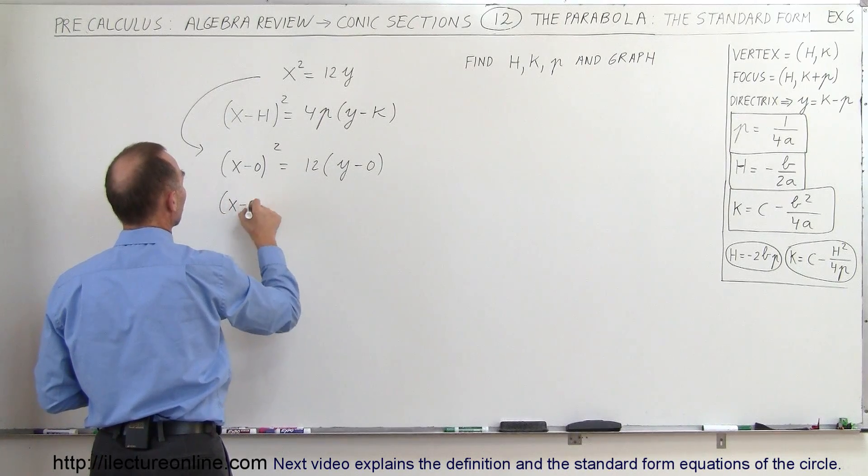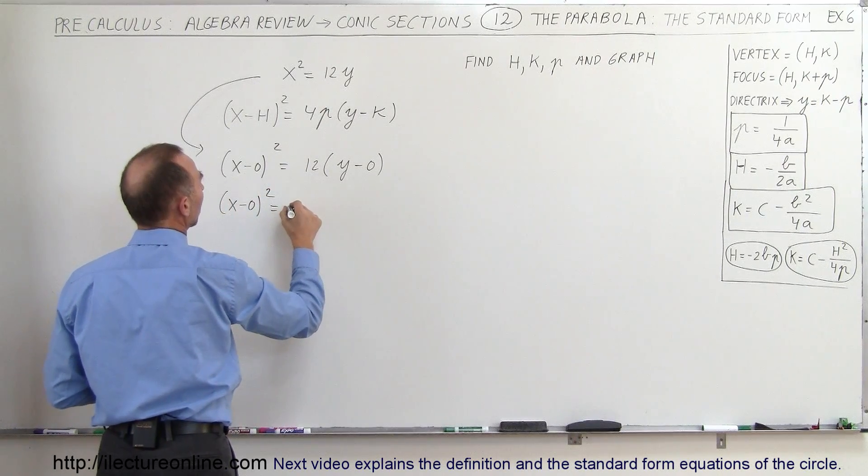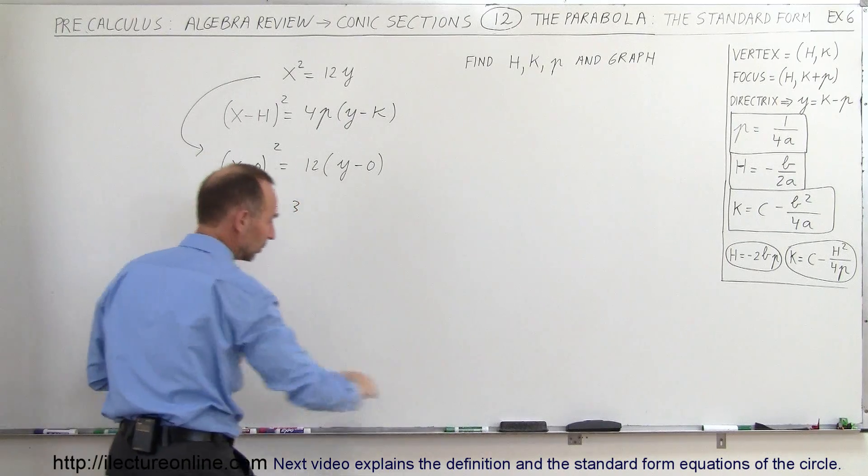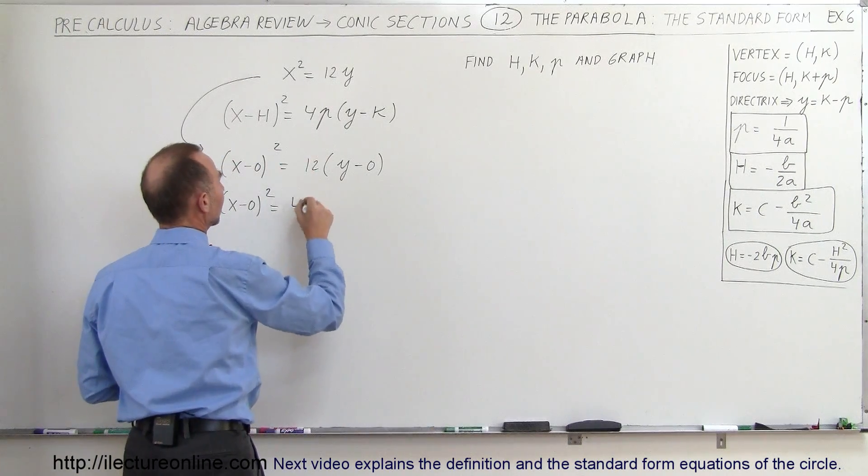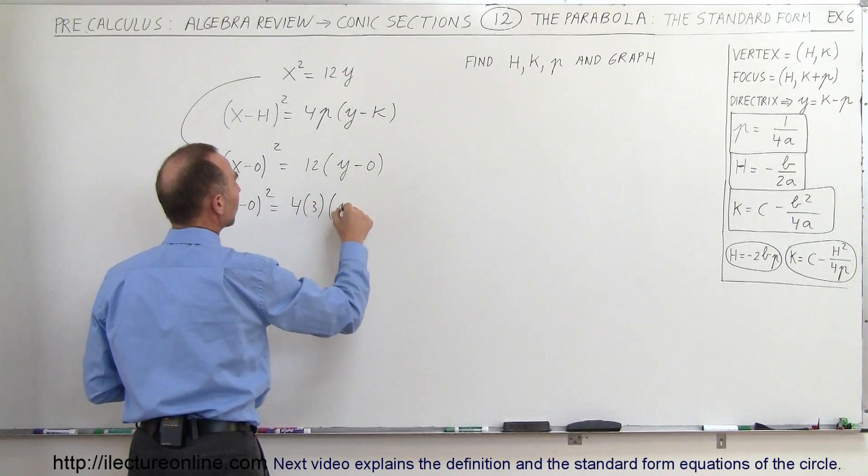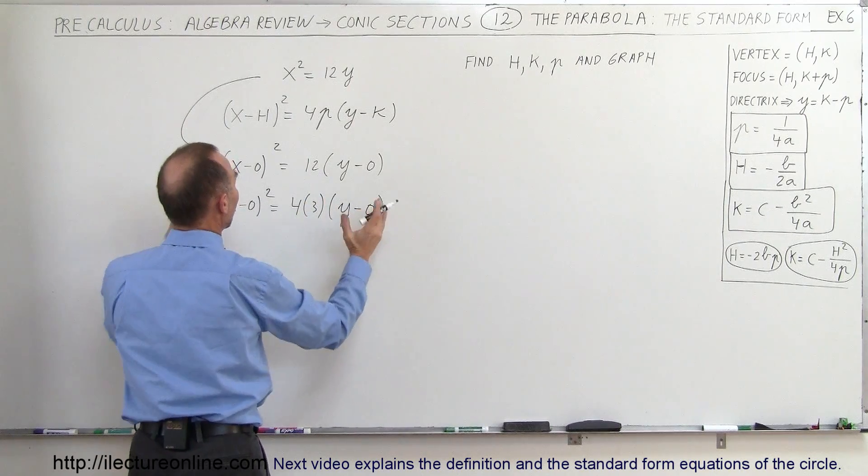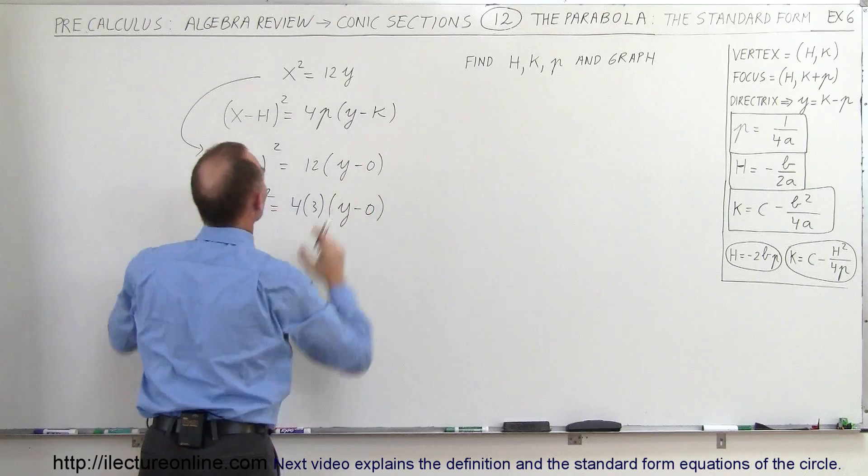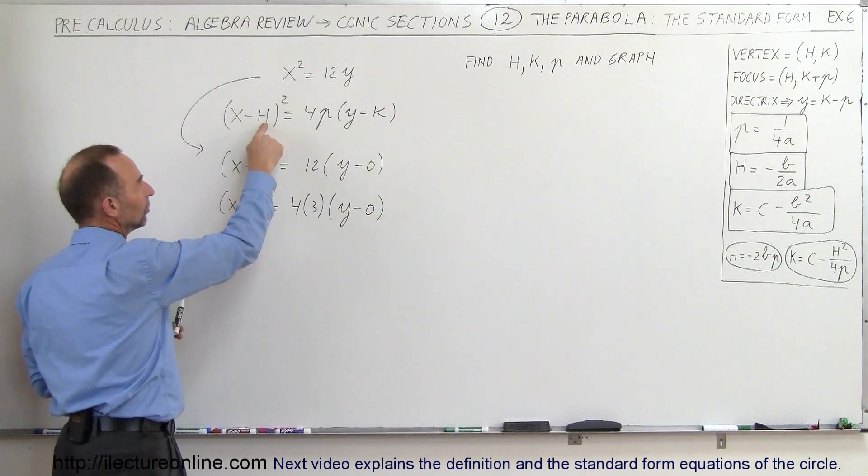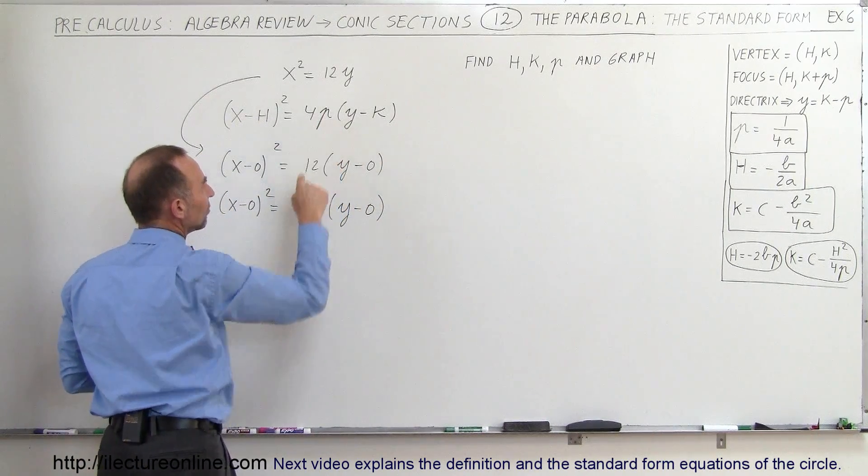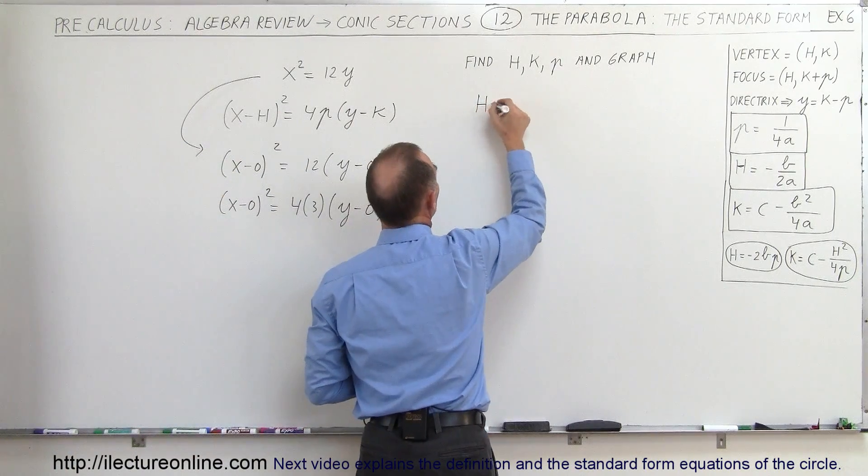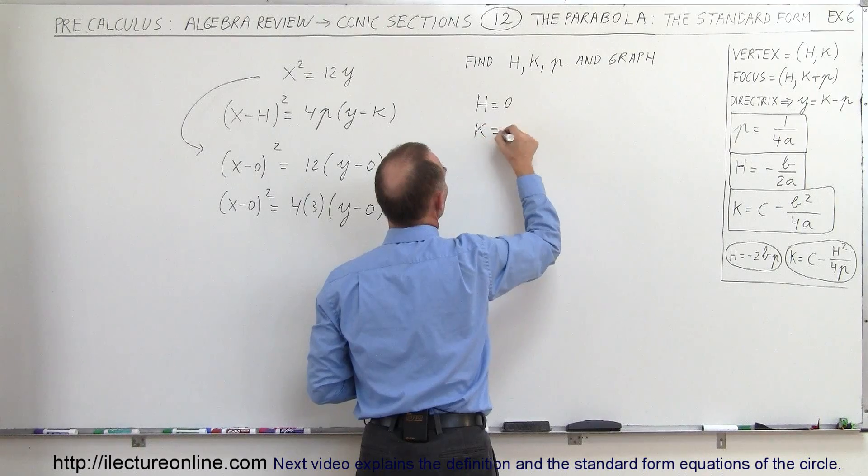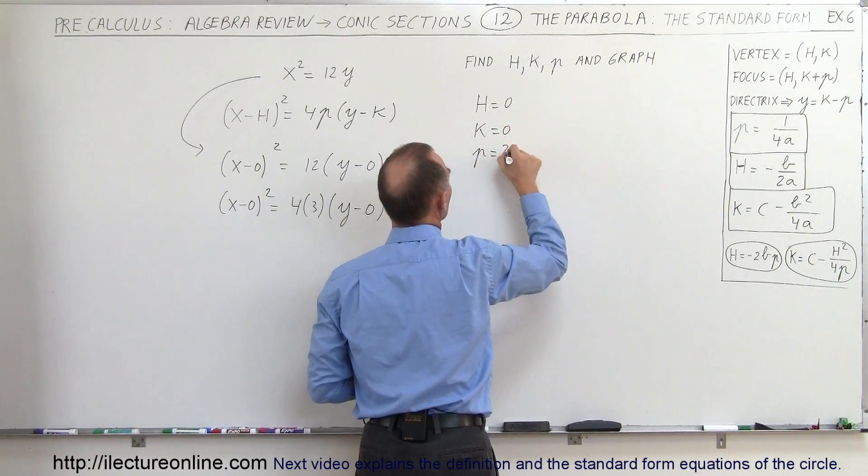So I can write this as (x - 0)² equals... how about 3? Nope, nope, I want to reverse that. How about 4 times 3 times (y - 0)? Now I have this looking exactly like that. Notice my h is 0, my k is 0, and my p equals 3. So h equals 0, k equals 0, p equals 3.